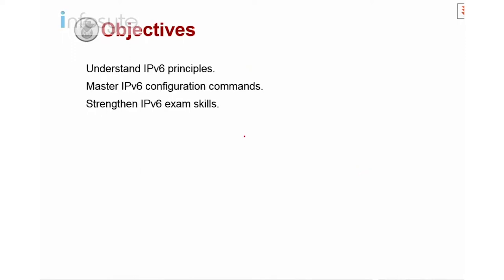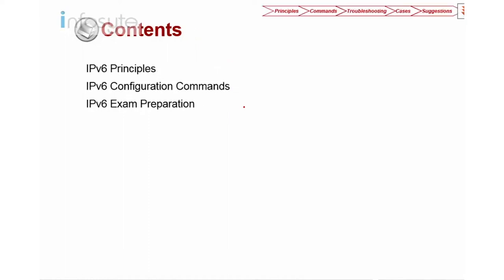Now the objectives for today's topic overall: we are going to understand the IPv6 principle, then look into some IPv6 configuration such as routing protocols, and also discuss a little bit on the exam scale. The content overview covers principle, command, and the exam.